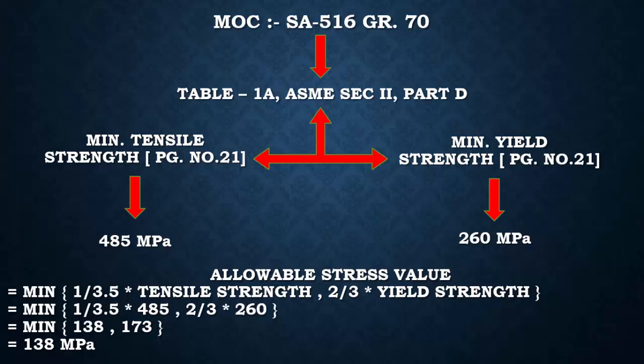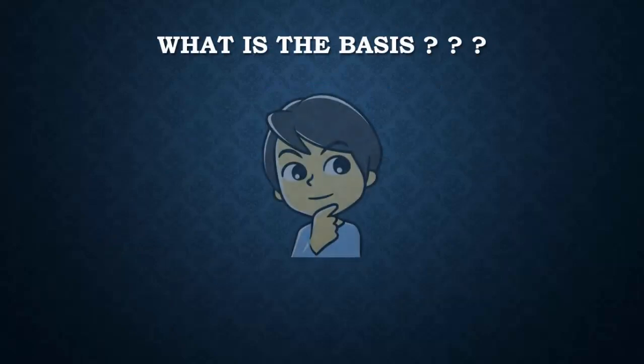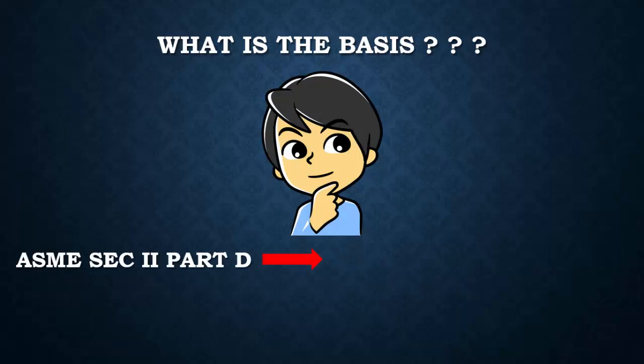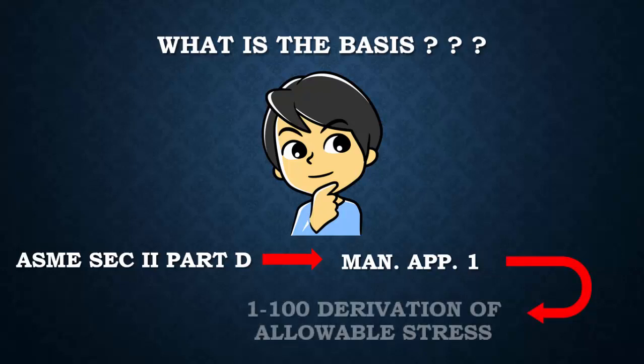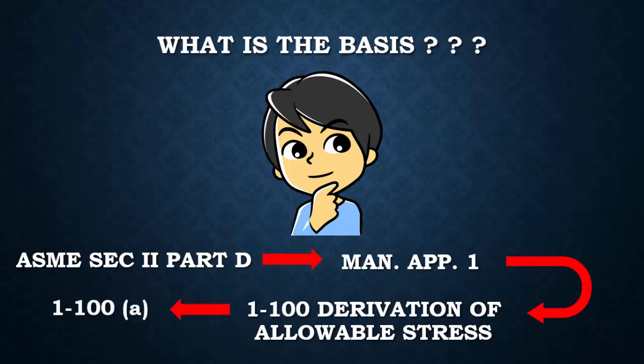To find the basis, go to ASME Section 2 Part D, Mandatory Appendix 1. In Mandatory Appendix 1, refer to Clause 1-100: 'Derivation for Allowable Stress Values.' Under Clause 1-100a, you will find the formula to establish allowable stress values for ASME Section VIII Division 1. There are other appendices for other codes as well — please refer to all of them to be fully clear on establishing allowable stress values.